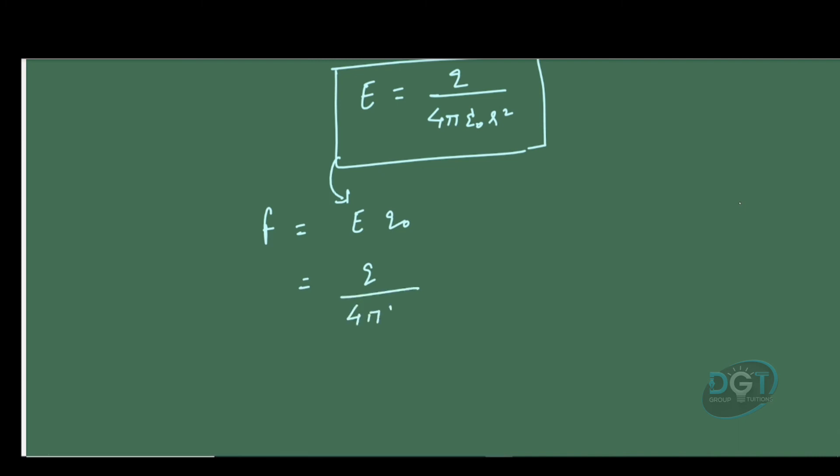Therefore, F = q·q₀/(4πε₀R²), which is Coulomb's law for the force between two charges kept at distance R from each other. Hence, Coulomb's law is derived from Gauss's theorem.